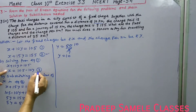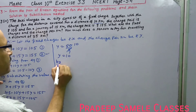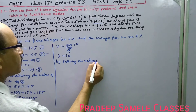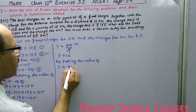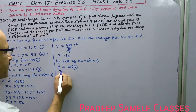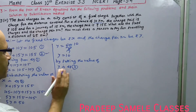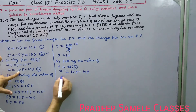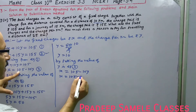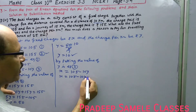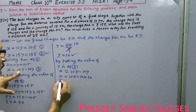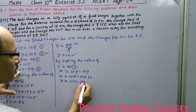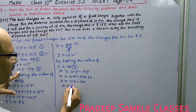Putting the value of Y = 10 into Equation 3 (from Equation 1): X + 10 × 10 = 105, so X = 105 − 100 = 5. Therefore X = 5. So the fixed charge is Rs. 5 and the charge per kilometre is Rs. 10.